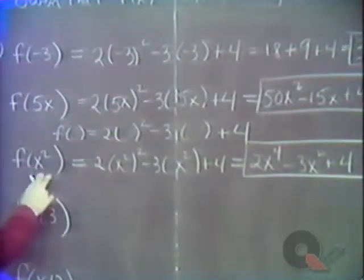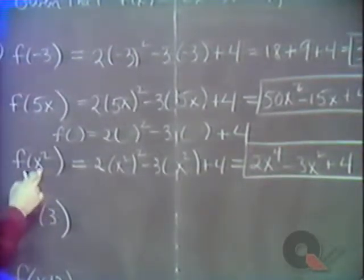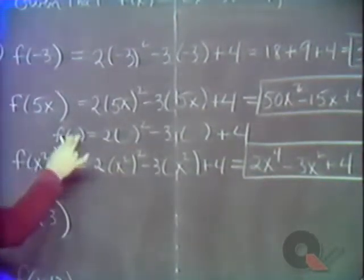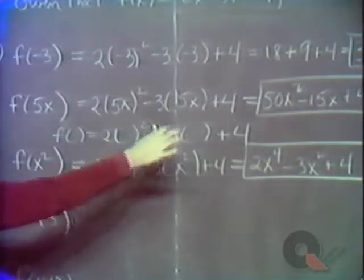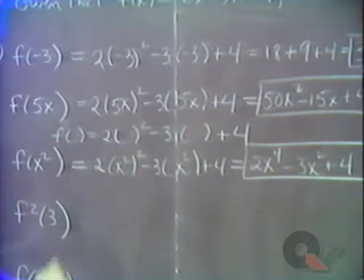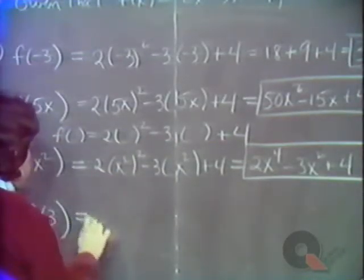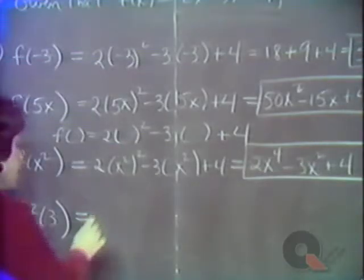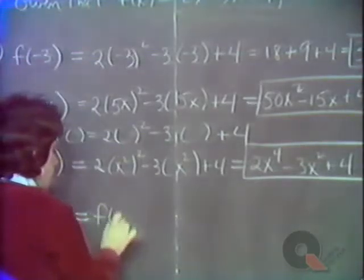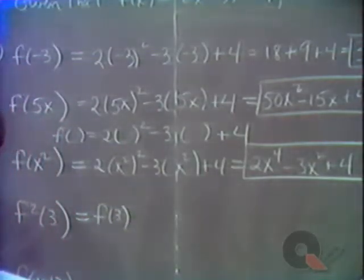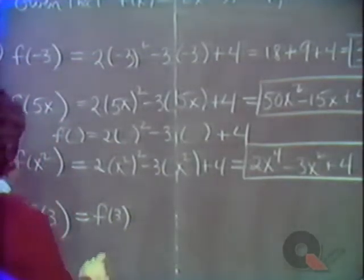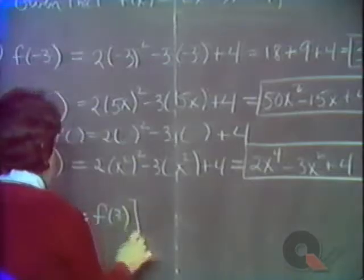f of x squared meant you were feeding x squared into the function. f squared of 3 means something else — this is defined to be f of 3, quantity squared.